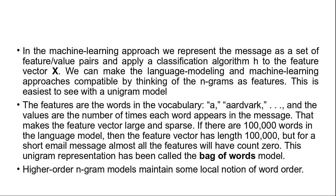In the machine learning approach, we represent the message as a set of feature-value pairs and apply a classification algorithm to the feature vector x. We can make the language modeling and machine learning approaches compatible by thinking of N-grams as features. With a unigram model, the features are the words in the vocabulary and the values are the number of times each word appears in the message. This makes the feature vector large and sparse — if there are 100,000 words, the feature vector has length 100,000, but for a short email, almost all features will have count zero.